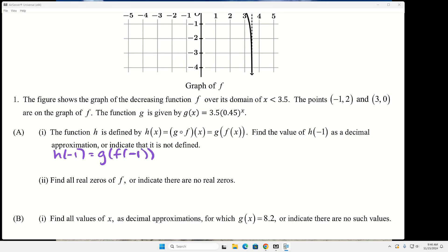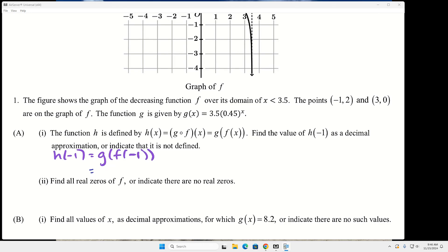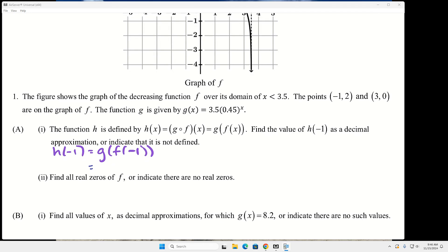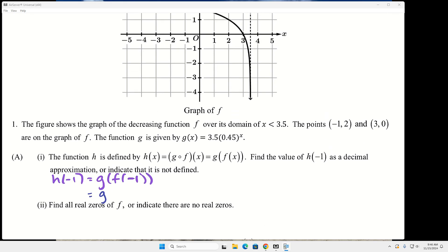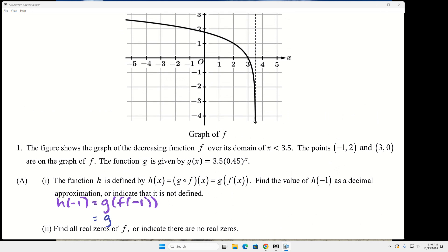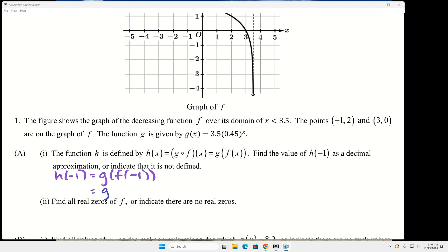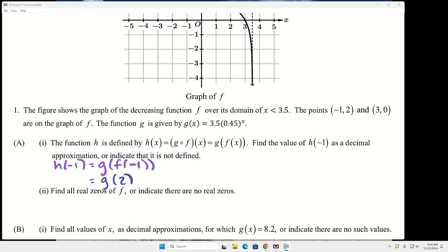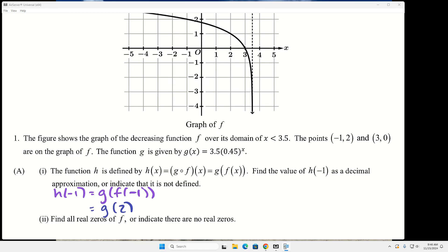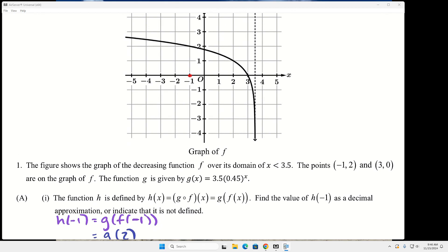Now we have done this lots and lots of times. Maybe not necessarily exactly like this, but we've done compositions where we plug numbers in tons. So f is the graph. So what is f of negative 1? 2. So it's the value of the function f when x is negative 1. So that's f of negative 2.